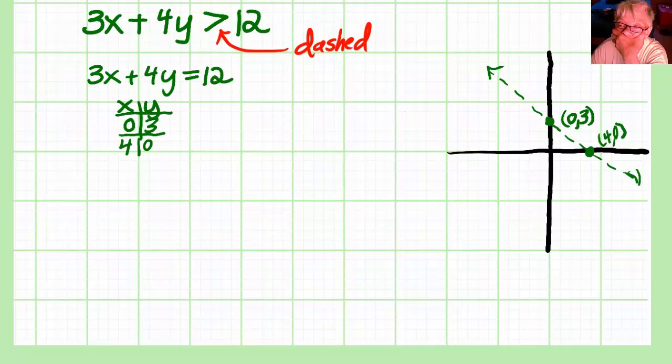All right. Now I choose a test point. My favorite test point is the very center point, the origin 0,0. Since the line is not going through 0,0, I can use it. I can use any point that's not on the line, but 0,0 is my favorite. You don't have to use it.